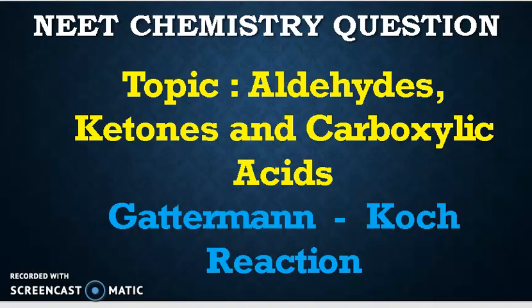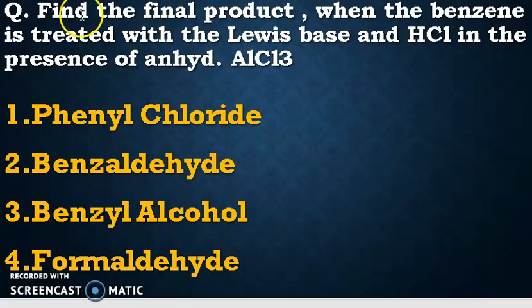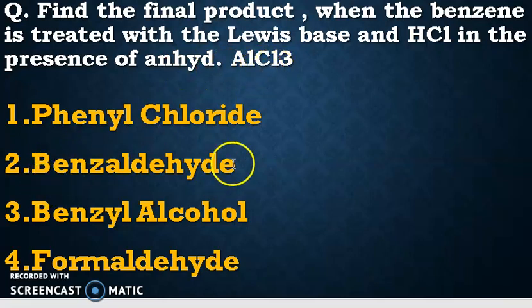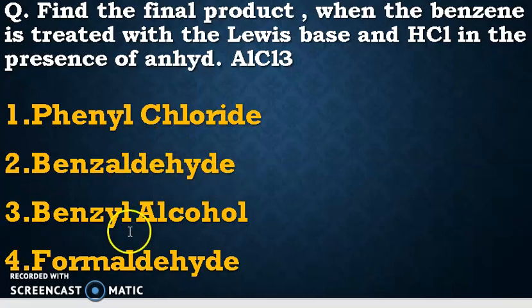We will go to the first question now. The question is: find the final product when benzene is treated with a Lewis base and HCl in the presence of anhydrous aluminium chloride. The options given are phenyl chloride, benzaldehyde, benzyl alcohol, and formaldehyde — from that we have to choose one option.